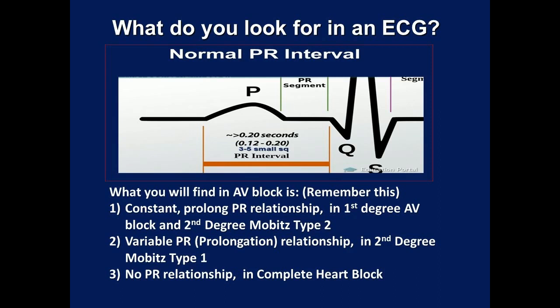What you will find in an atrioventricular block — remember this: 1. Constant prolonged PR interval in 1st degree atrioventricular block, and constant PR interval in 2nd degree Mobitz Type II. 2. There is variable PR interval — that is, prolongation — in 2nd degree Mobitz Type I, or Wenckebach, with group beating.